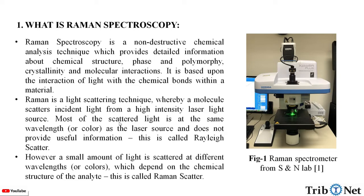Most of the scattered light is the same wavelength or color as the laser source and does not provide useful information — this is called Rayleigh scattering. However, a small amount of the light is scattered at a different wavelength or color, which depends on the chemical structure of the analyte. This is the Raman scattering.